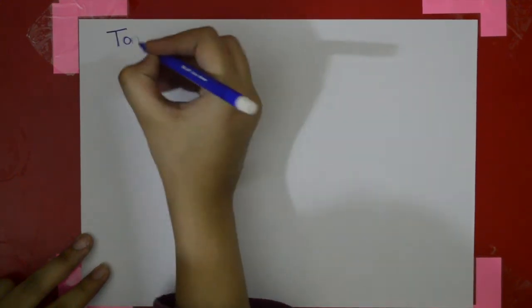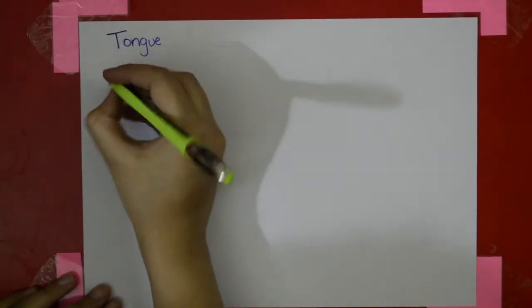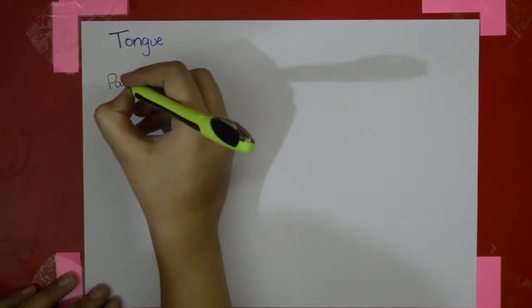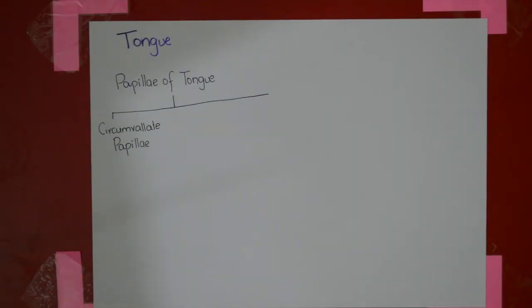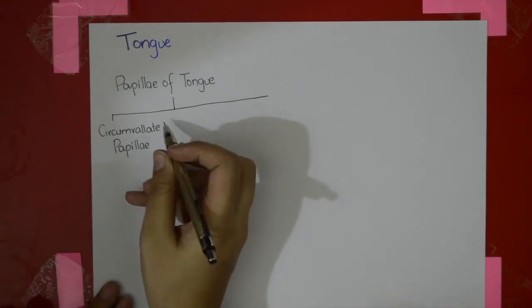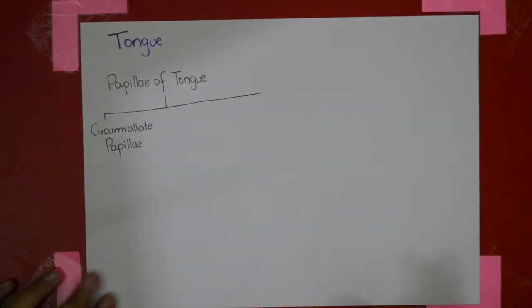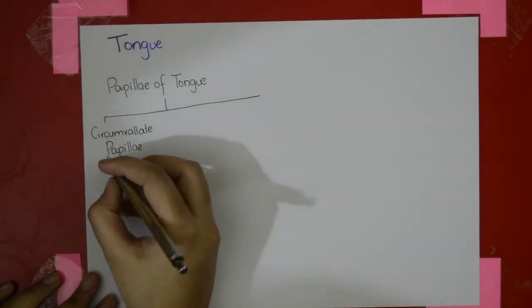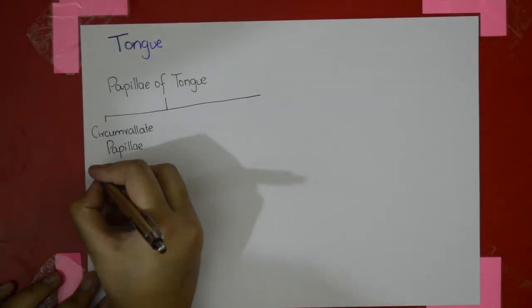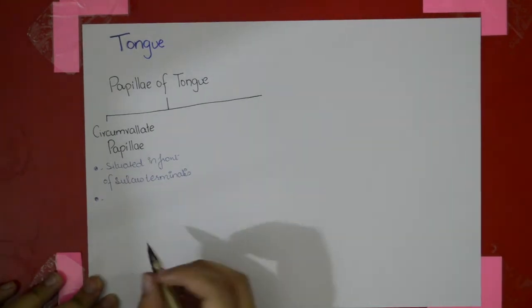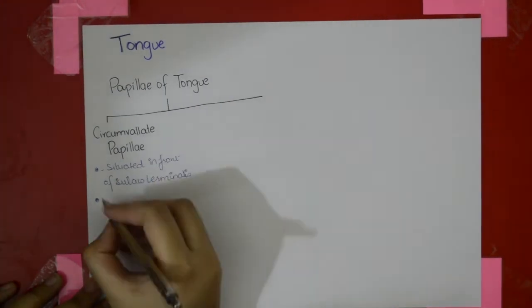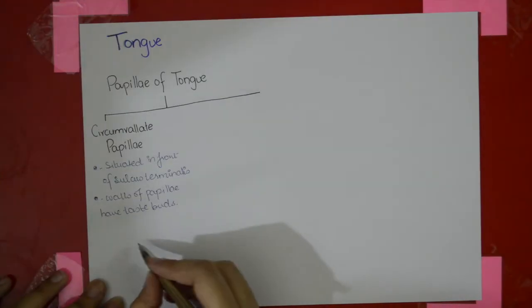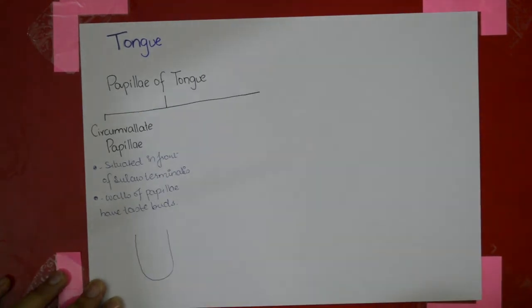The topic we're going to cover today is the tongue. The first part is the papillae of the tongue. The first papilla we'll discuss is the circumvallate papillae, also called vallate papillae — so if your exam says vallate, it's the same as circumvallate. Circumvallate papillae are situated in front of the sulcus terminalis, and the walls of the papillae have taste buds.